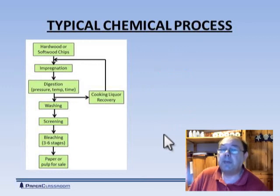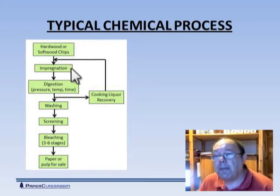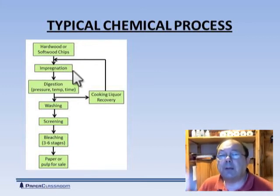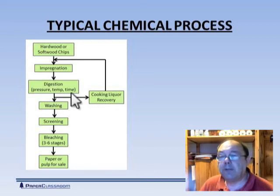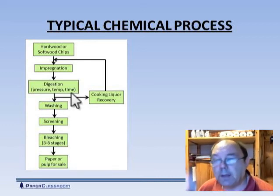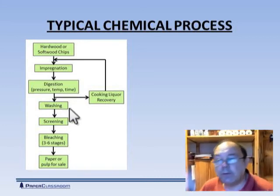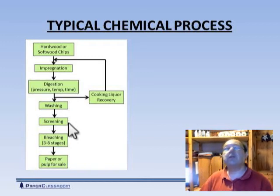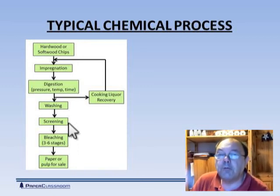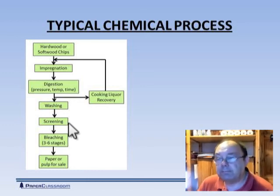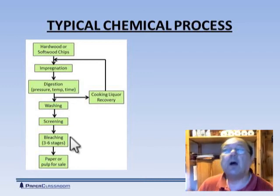Here's a typical chemical pulping process. We take the hardwoods or softwoods, impregnate them with the cooking liquor — the special chemicals — put them into the digester at high temperatures and pressures for a given length of time, dissolving away mainly the lignin. Then we remove the dissolved lignin, wash the fibres, put them through screens so we get individual fibres, and any fibre bundles not properly separated go back around the system. Then we bleach them — three to six stages depending on whether it was a sulfate or sulfite cook — and then we've got the pulp ready for sale.